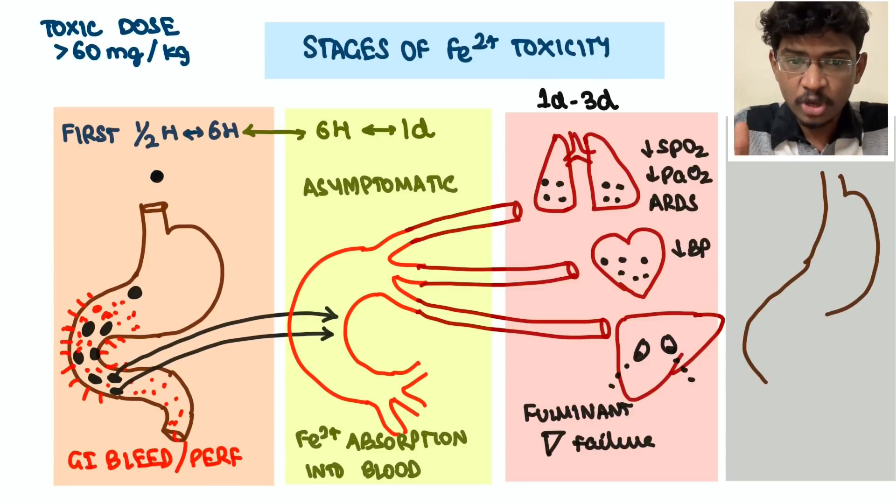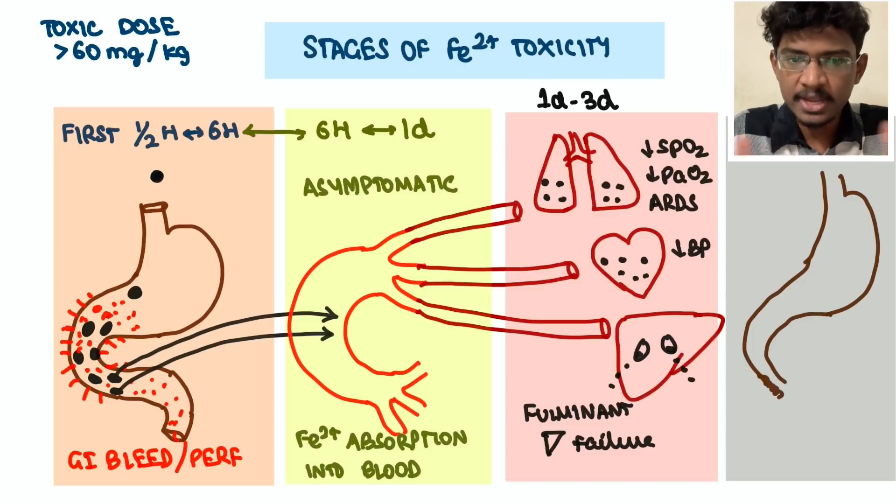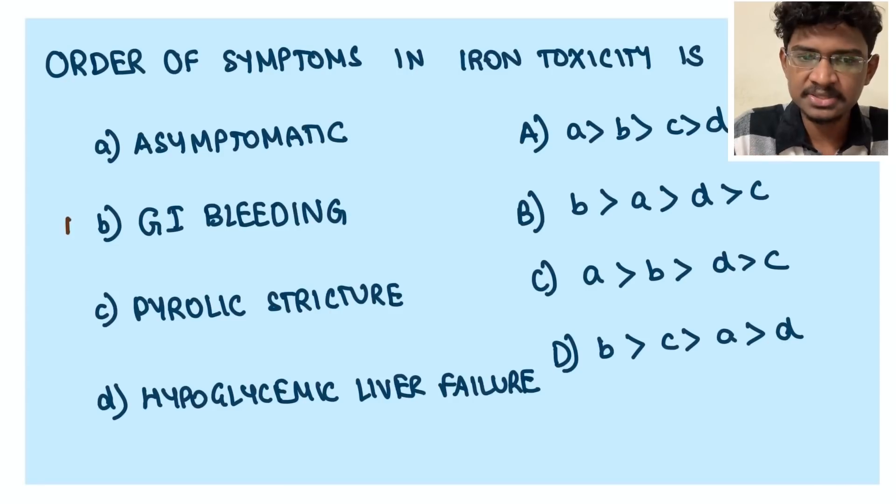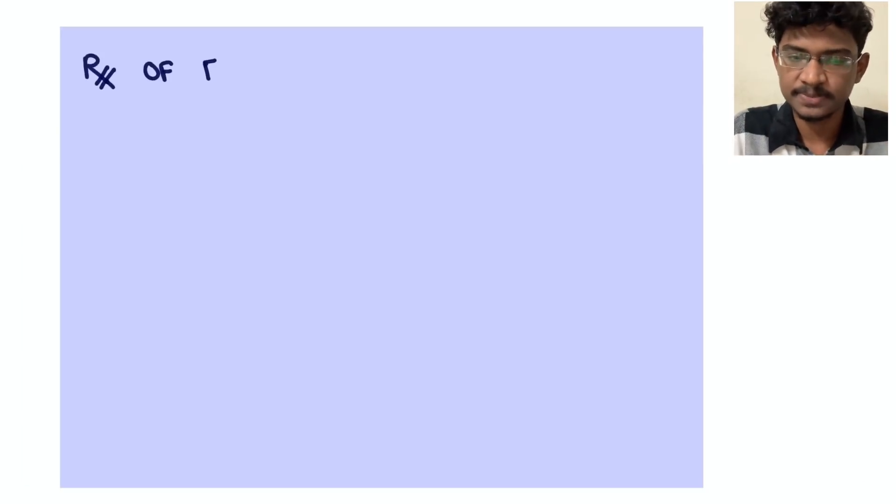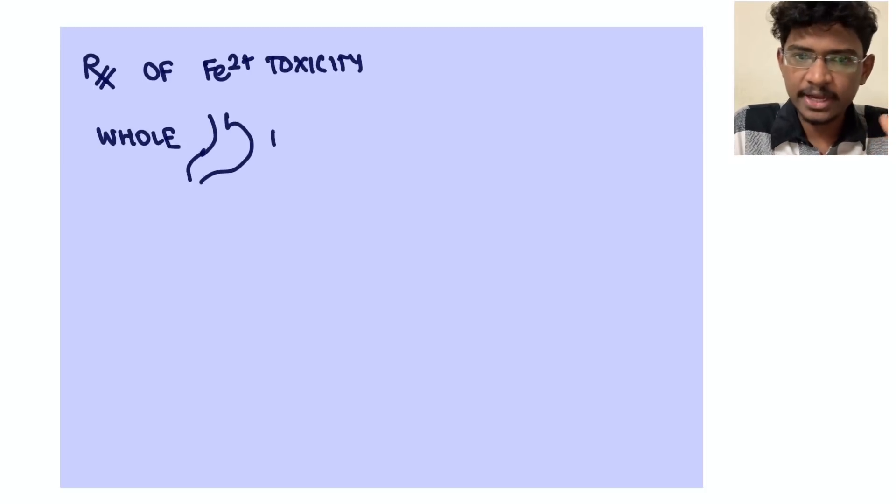Next, if at all the patient survives this phase, then in two weeks what happens is that much of irritation, gastritis at the gastric as well as duodenal area, that becomes healing. Healing starts resulting in formation of strictures. Then they have given us duodenal strictures formation. So if you see the order will be first GI bleed, next the patient will be asymptomatic, next depositing in tissues - ARDS, hypotension, cardiogenic shock and liver failure, and at last peptic strictures, duodenal strictures formation.